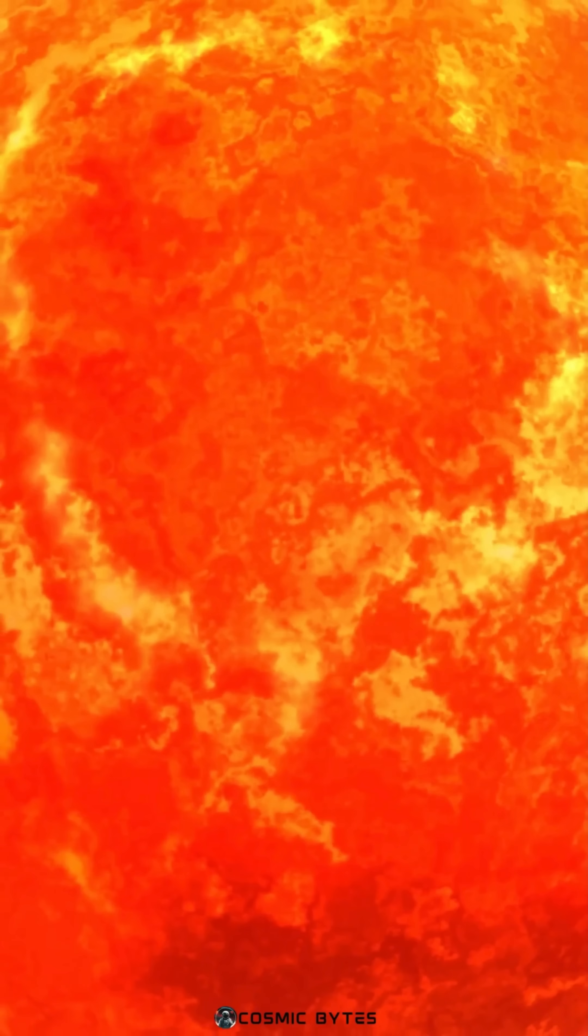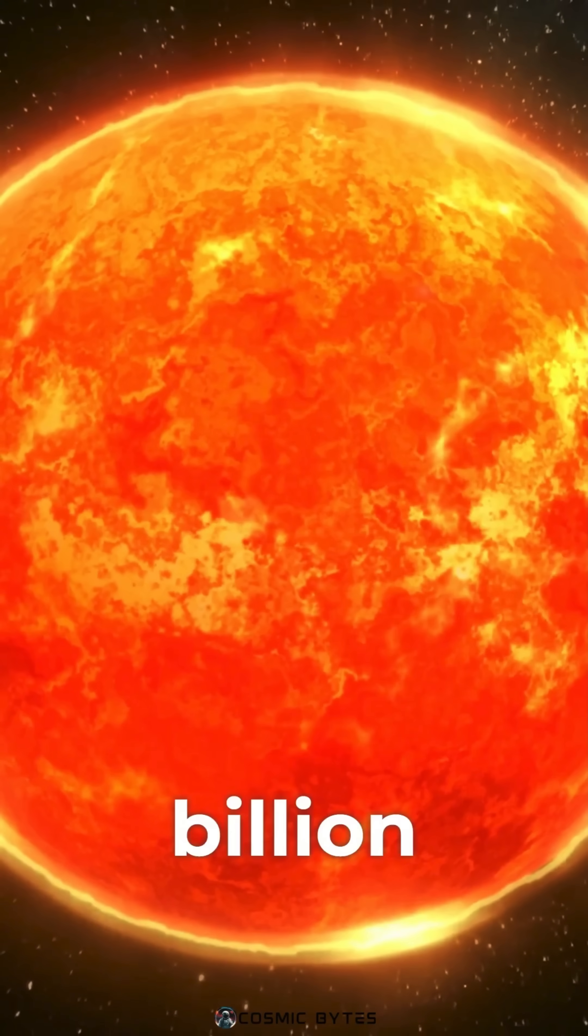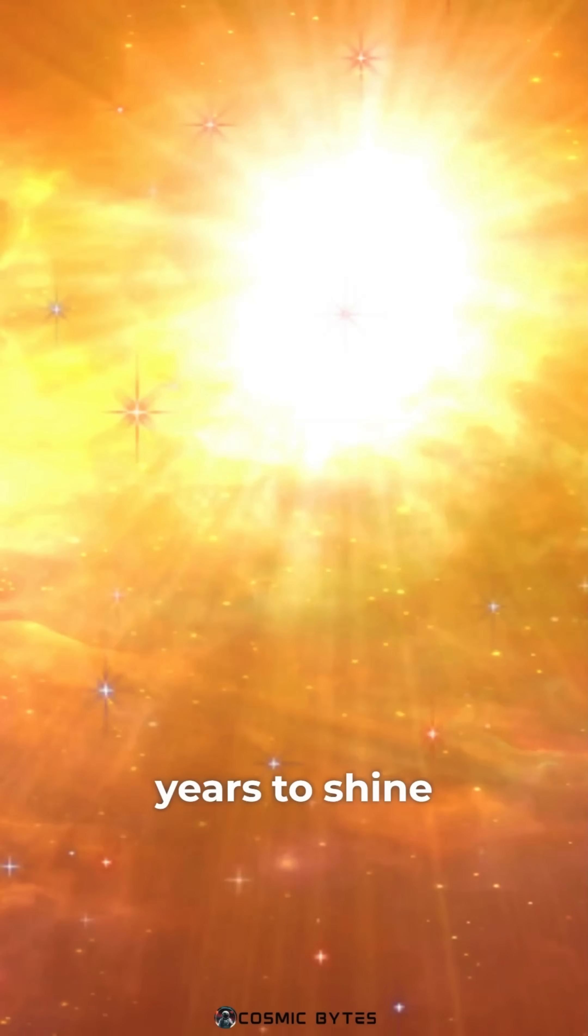The Sun, our beloved star, is in its middle age. At approximately 4.6 billion years old, it's still got about 5 billion more years to shine brightly before reaching the end of its life cycle.